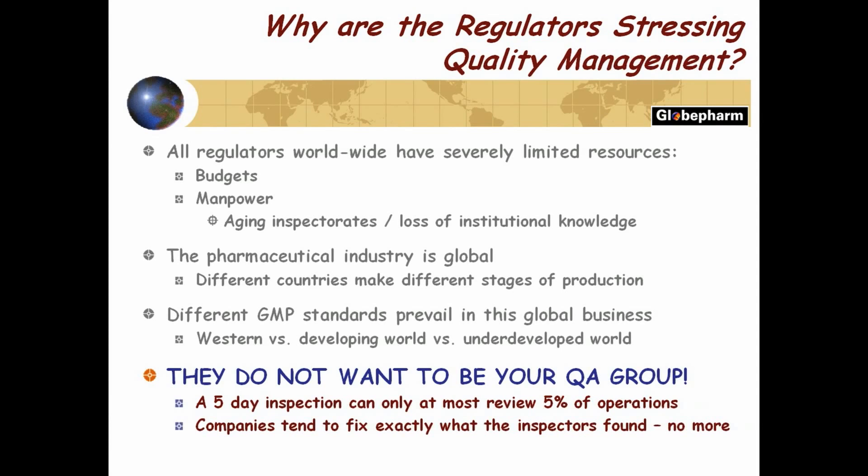They realize they're coming for five days and can only look at five to ten percent of what's going on. The things they find are the ones so bad they hit them in the face. Which is why FDA changed its strategy in responding to a 483: if a 483 says the balance is not calibrated and you respond saying you've now calibrated it, FDA doesn't accept that anymore. They want to see where you investigated your system that allowed the balance to go uncalibrated. That's the bigger systemic issue they want to see. They're coming once every two or three years and only looking at five percent — you have to be 100% ready for a 5% inspection.